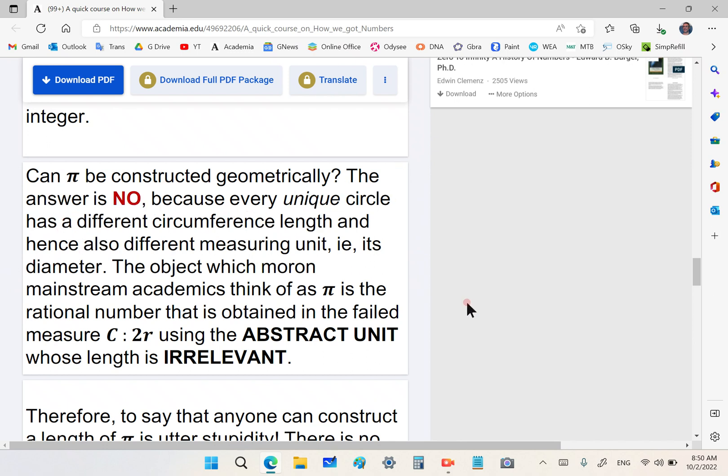Can pi be constructed geometrically? The answer is no, because every unique circle has a different circumference length, and hence also a different measuring unit, its diameter. No two distinct circles have the same diameter. Do you see, the object which the morons in mainstream mathematics academia think of as pi is the rational number that is obtained in the failed measure of the circumference to the diameter, using the abstract unit. If you take different circles, the length of the diameter doesn't matter. The diameter is a unit. When we talk about the abstract unit, we don't care about its size.